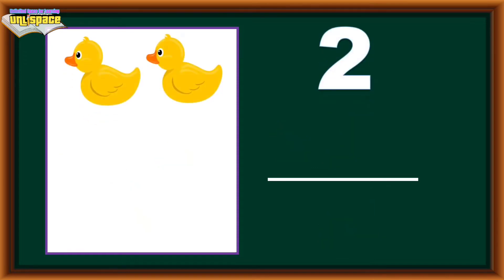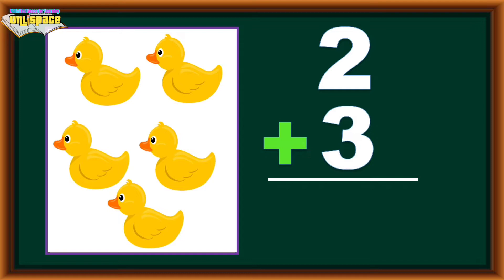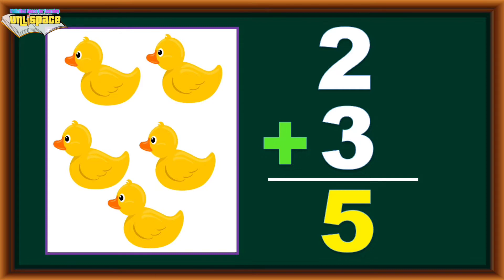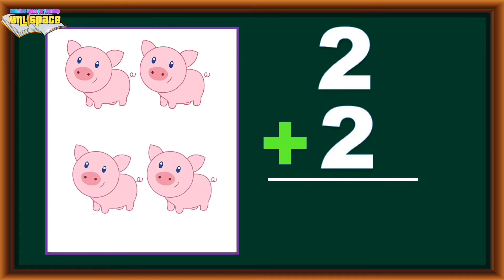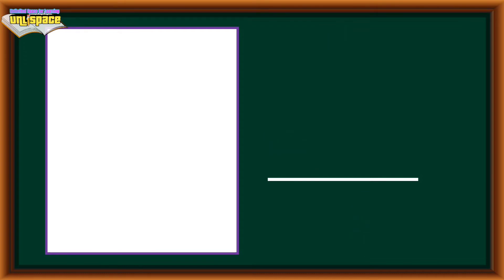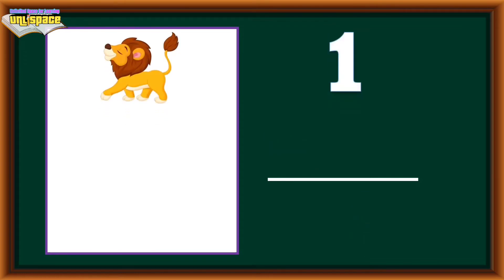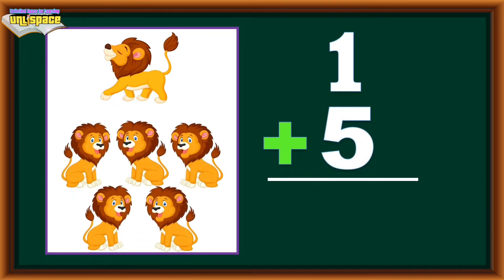2 ducklings plus 3 ducklings equals 5 ducklings. 2 pigs plus 2 pigs equals 4 pigs. 1 lion plus 5 lions equals 6 lions.